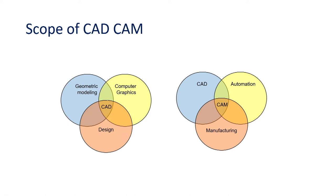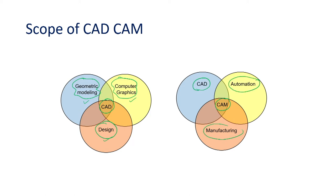What is the scope of CAD and CAM? CAD is the intersection of three disciplines: geometric modeling, computer graphics, and mechanical design. To have expertise in CAD we must have knowledge of computer graphics, mechanical design, and modeling. Computer-aided manufacturing is the intersection of computer design, automation, and manufacturing operations or processes. To become a CAM engineer, one must know CAD-related software and technologies, various manufacturing processes used in industry, and automation technologies.